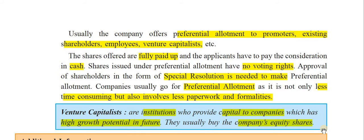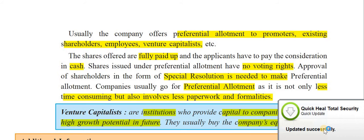When someone is given preference — in this case preferential allotment — they don't have voting rights. Approval of shareholders in the form of a special resolution is needed to make preferential allotment. Companies usually go for preferential allotment as it is not only less time-consuming but also involves less paperwork and formalities.